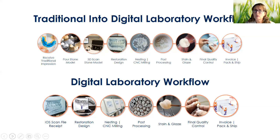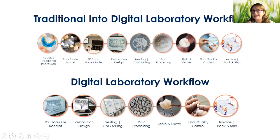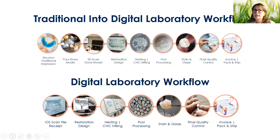In a traditional analog workflow, you're going to send the PVS impression in, we pour the model, then 3D scan it — we scan the impression more so than the model, though we could do either. It then goes into restoration design, and depending on what you're prescribing, it might go to different departments. Then there's actual milling — what we refer to as a puck, where many different restorations are put in. We might be milling 12 units at a time per puck.